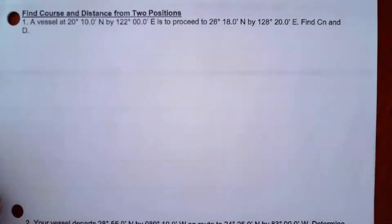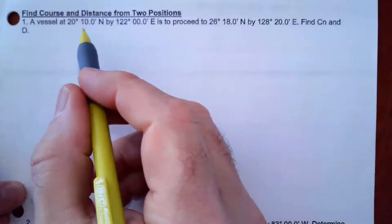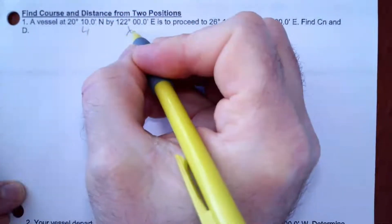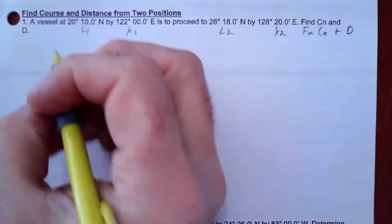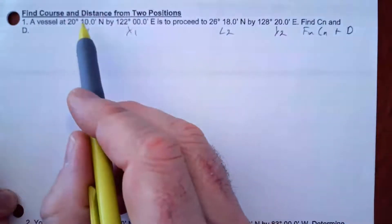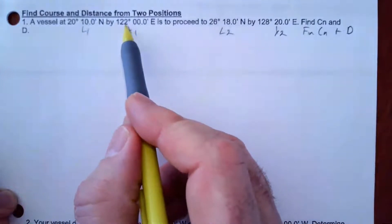The first thing I want to do is draw a diagram of what's going on in the problem. I'm leaving from L1, longitude 1, and going to L2, longitude 2, and I'm going to find C(N) and D — that's course from north, the course to steer. I'm going from 20 north to 26 north, so I'm going further north, and from 122 east to 128 east, so I'm going further east.